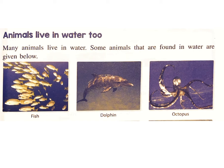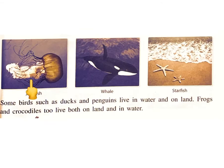Mountain goat, yak, and snow leopard are animals that live on mountains. Animals live in water too. Some animals found in water include fish, dolphin, octopus, jellyfish, whale, and starfish. Some birds such as ducks and penguins live in water and on land.